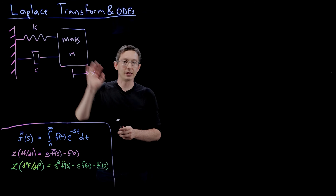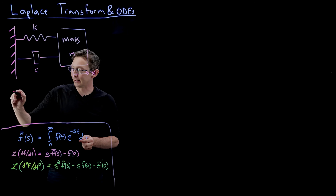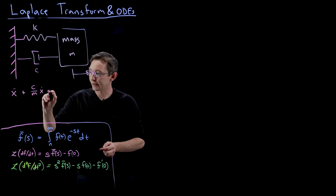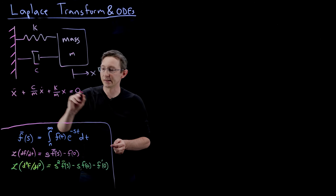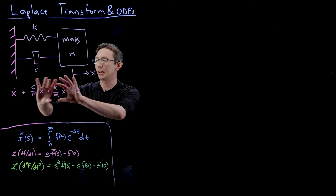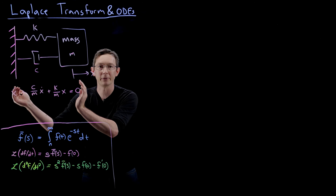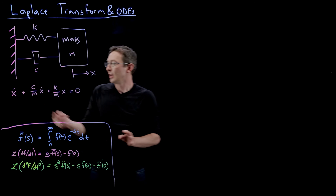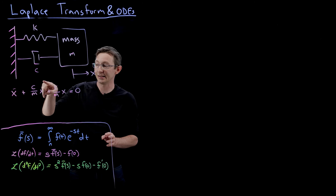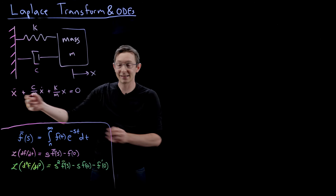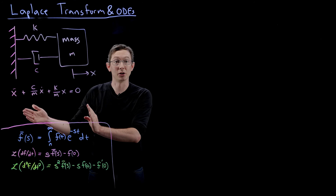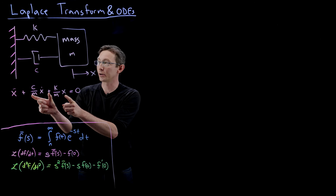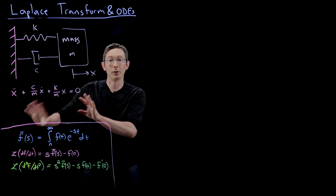The differential equation for this system is quite simple to write down: X double-dot plus C over M times X-dot plus K over M times X equals zero. We're going to take the Laplace transform of this differential equation, turning it from a second-order ODE into an algebraic equation in the Laplace variable. This formula is just Newton's second law — force equals mass times acceleration — where X-dot is velocity, X double-dot is acceleration, and the remaining terms represent forces from the damper and spring.